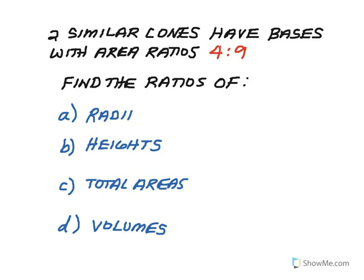So in this first example, we have two similar cones that have bases with area ratios 4 to 9. So key thing is, these cones, we're told, are similar. They have to be similar in order for this all to work. So if their area ratios are 4 to 9, and I'm supposed to find the ratios of their radii, their heights, their total areas, and their volumes, I'm going to start with the ratios of their total areas.